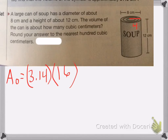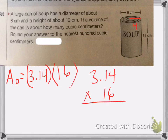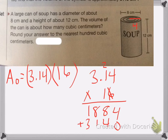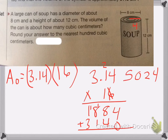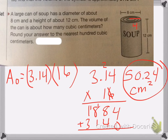Let's go ahead and do the math: 3.14 multiplied by 16. 6 times 4 is 24, carry the 2. 6 times 1 is 6, plus 2 is 8. 6 times 3 is 18. Then 4, 1, 3. Add those together and end up with 50.24. So the area of my circle is 50.24 centimeters squared.